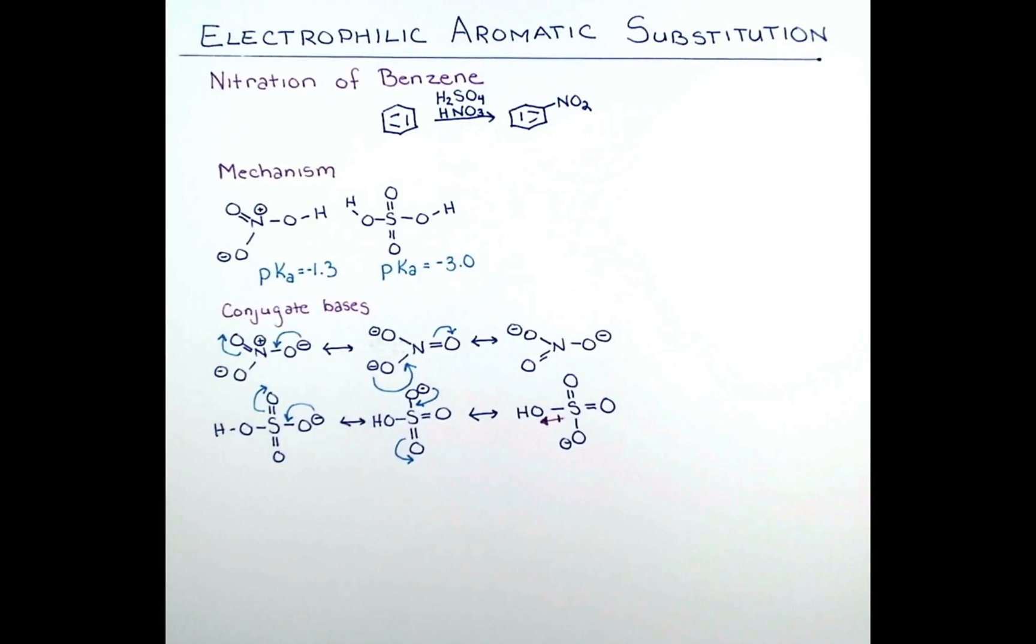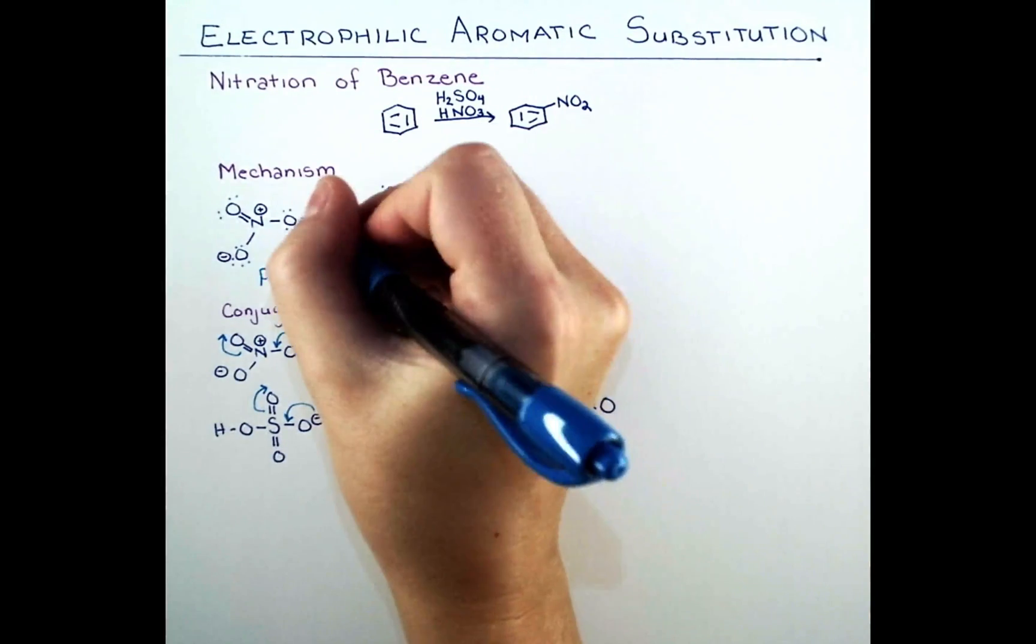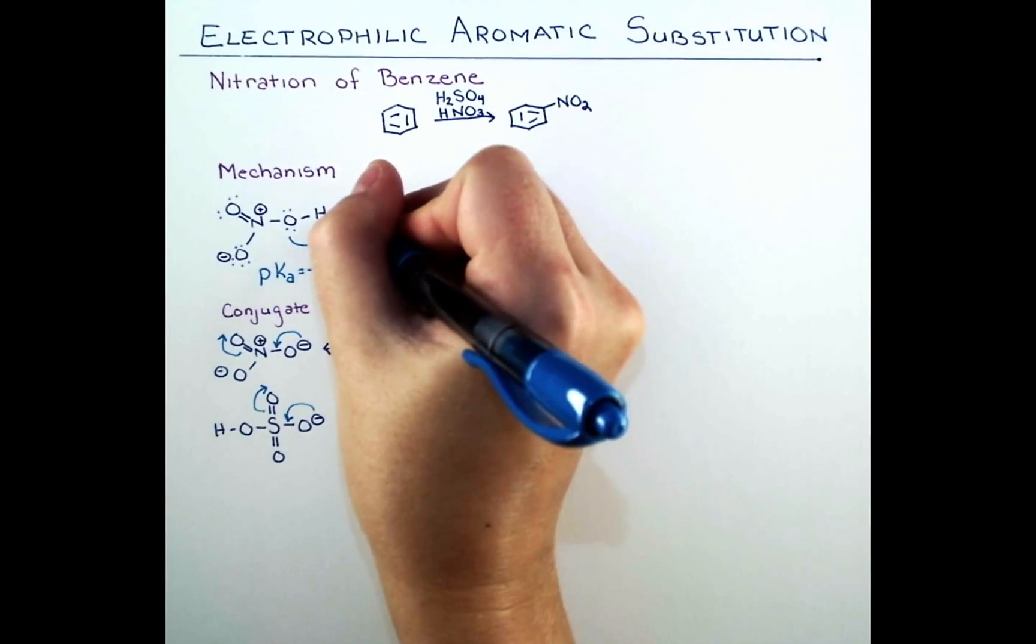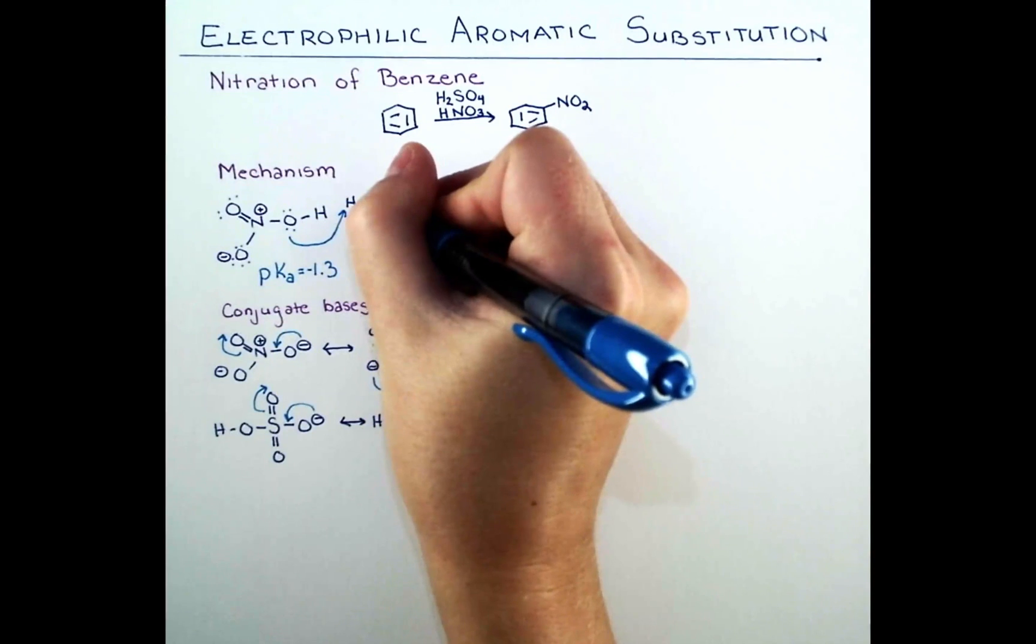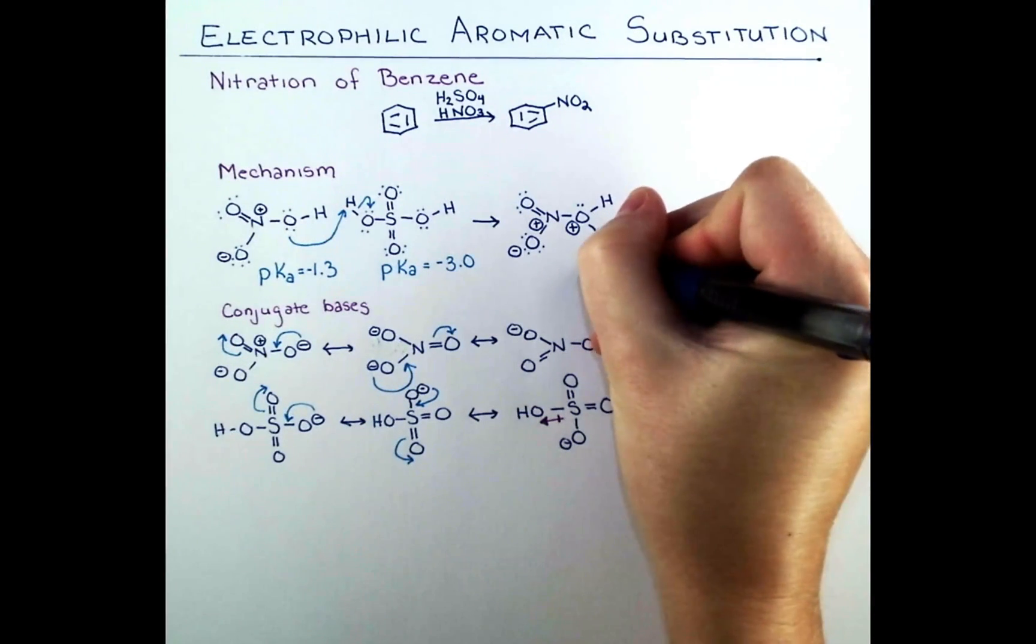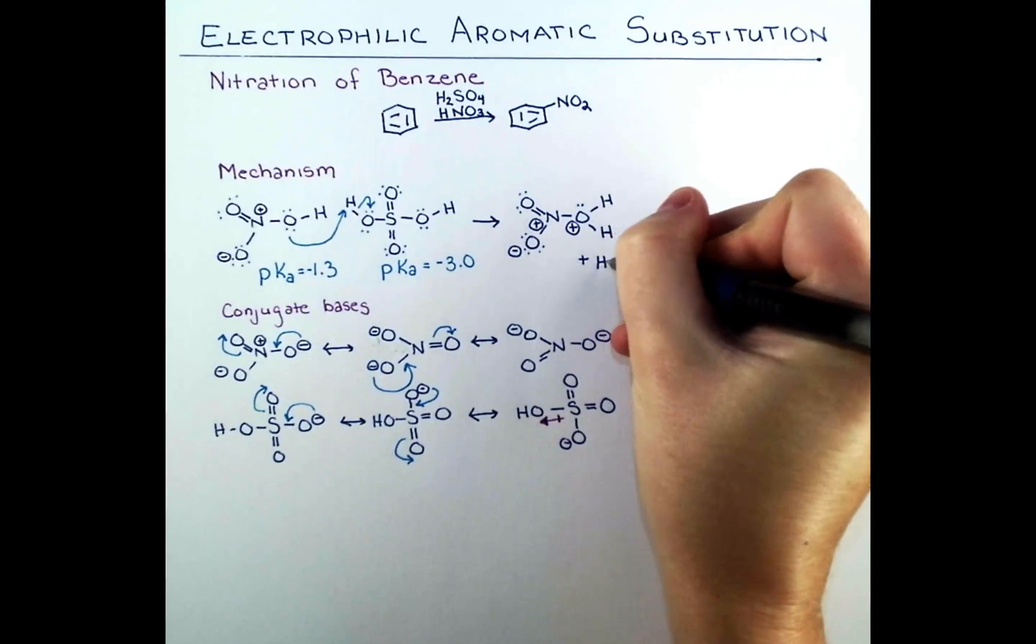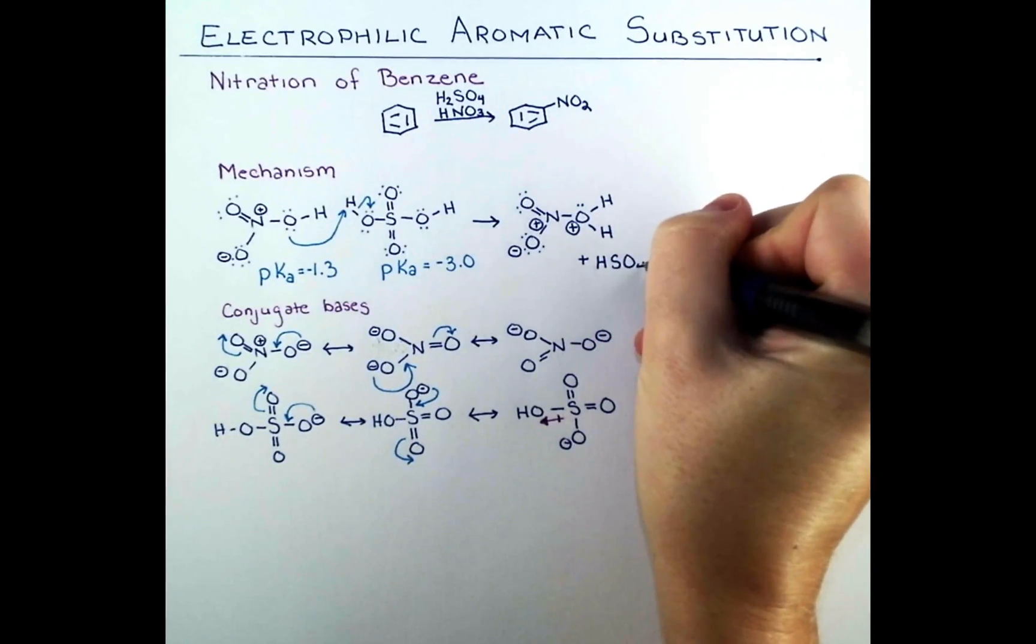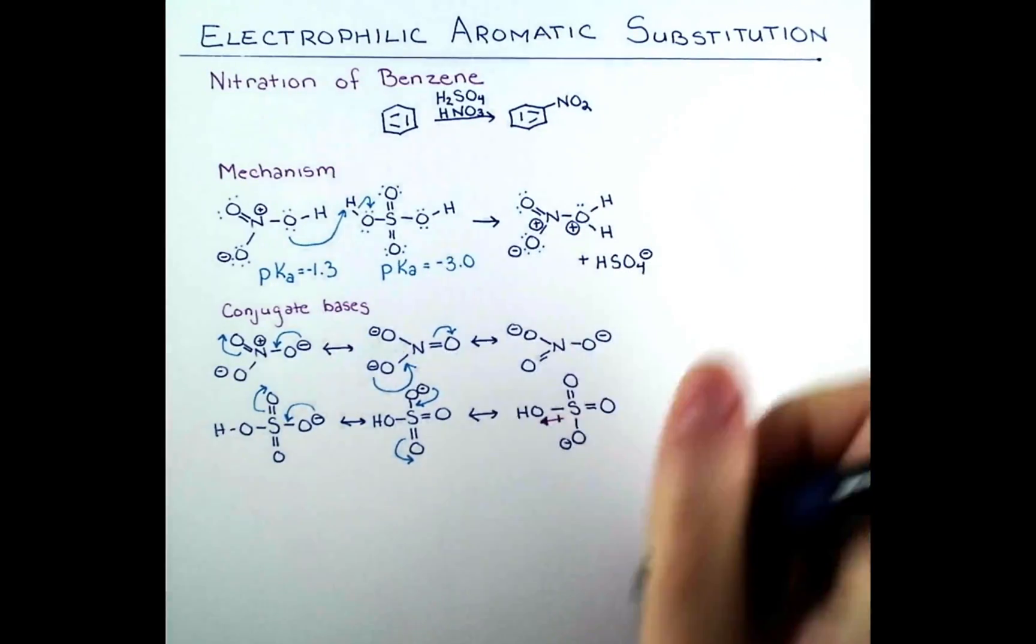Returning to our mechanism, we can now show nitric acid getting protonated by sulfuric acid. If we protonate the oxygen containing the hydrogen atom, this will make water, which is a good leaving group. So the product of this step is a protonated form of nitric acid and the conjugate base of sulfuric acid, which we looked at in detail below.